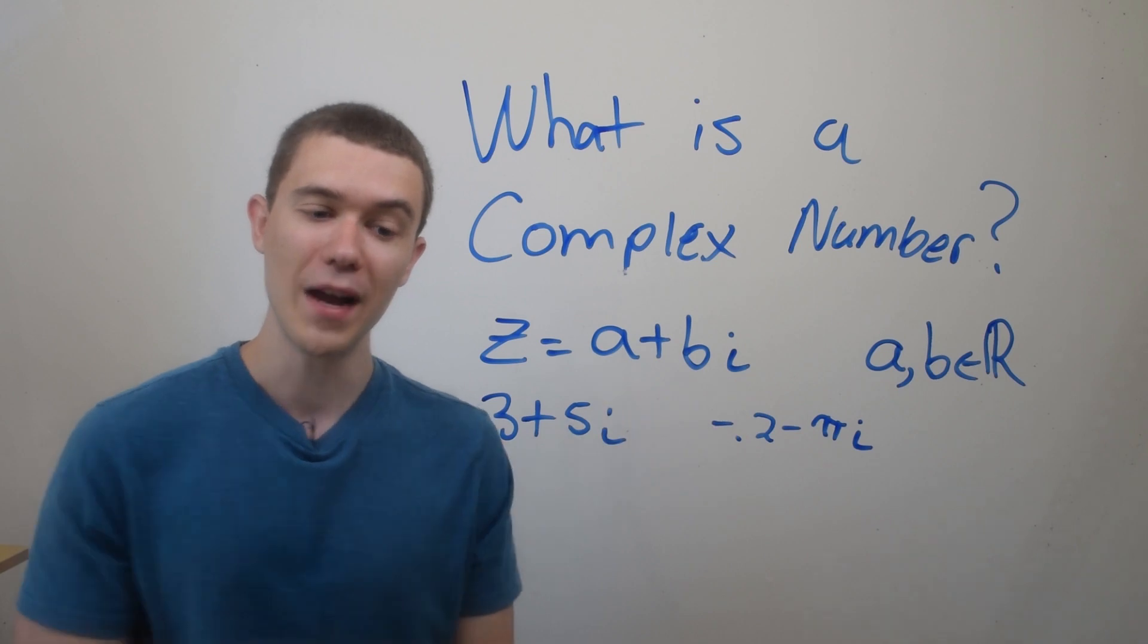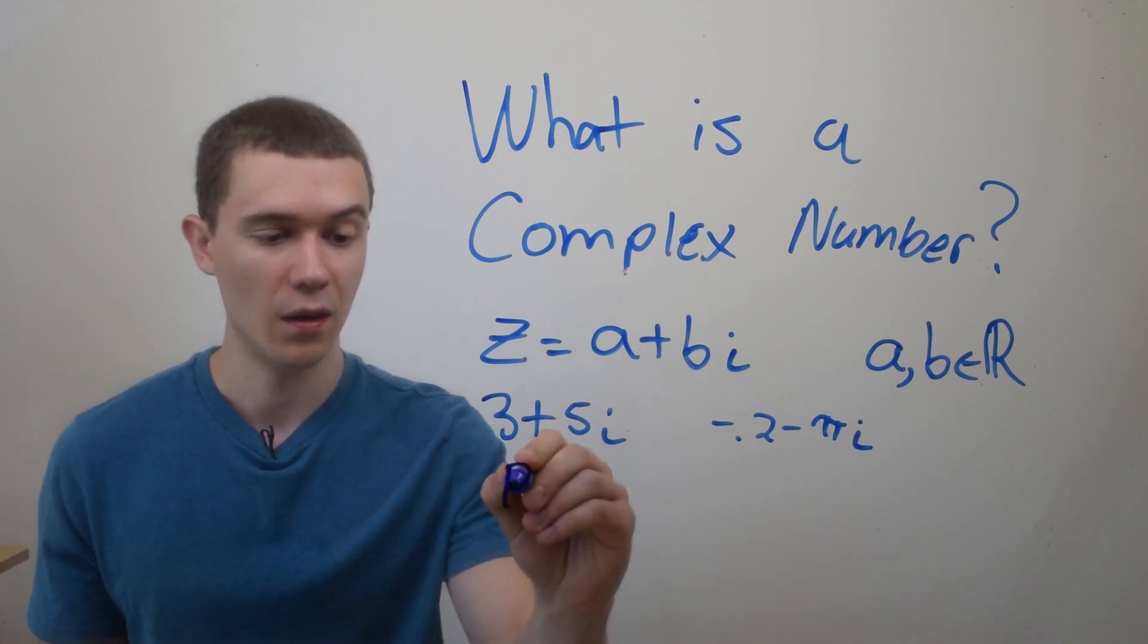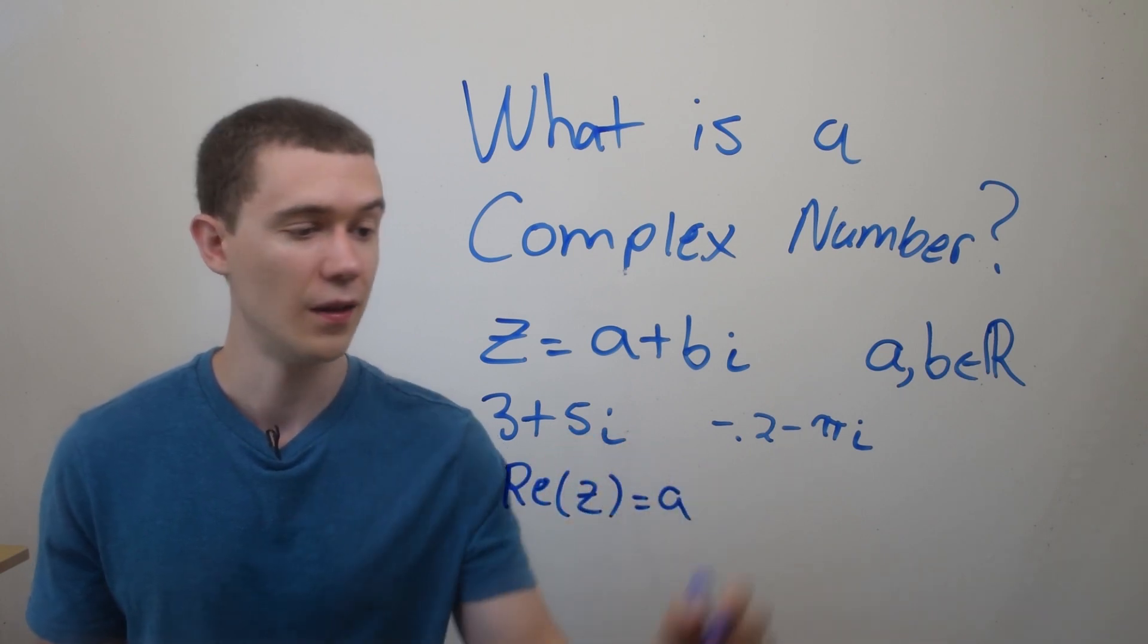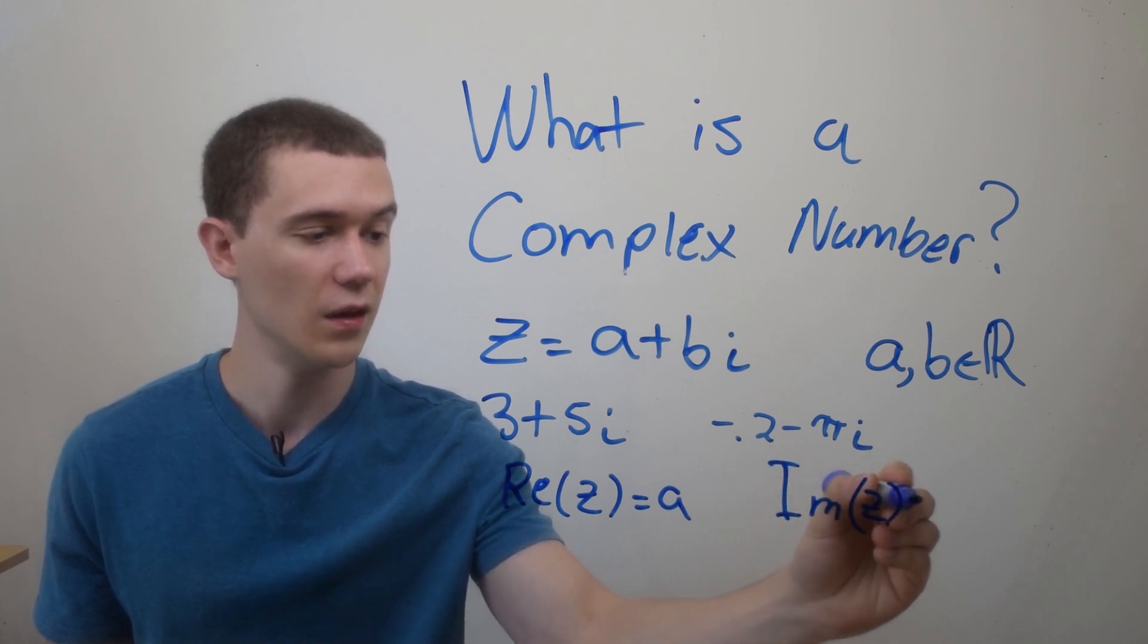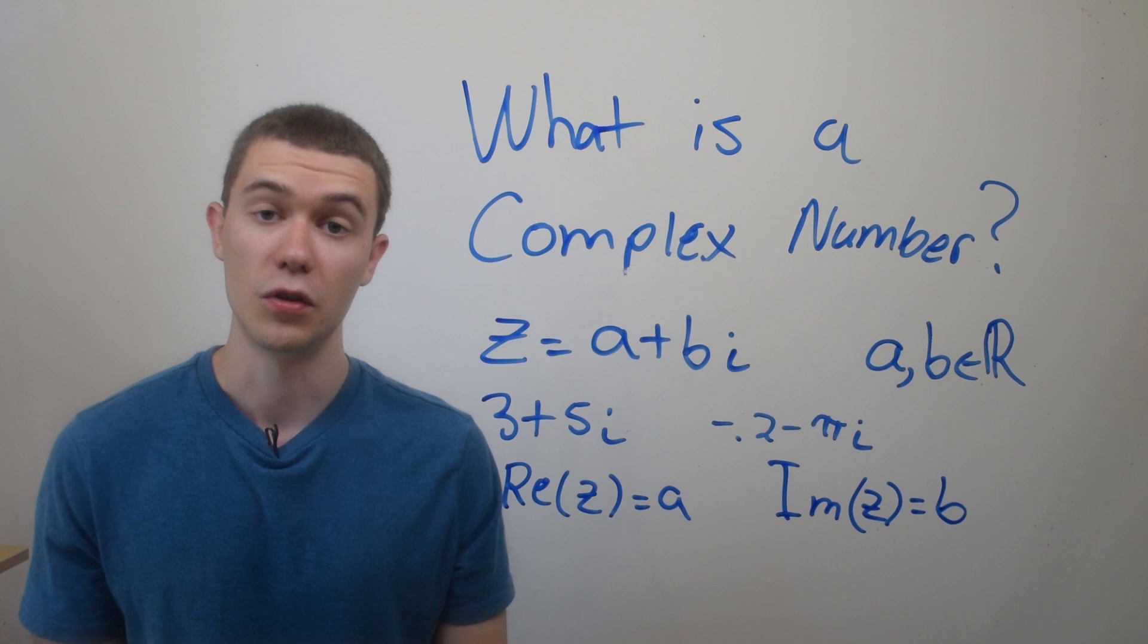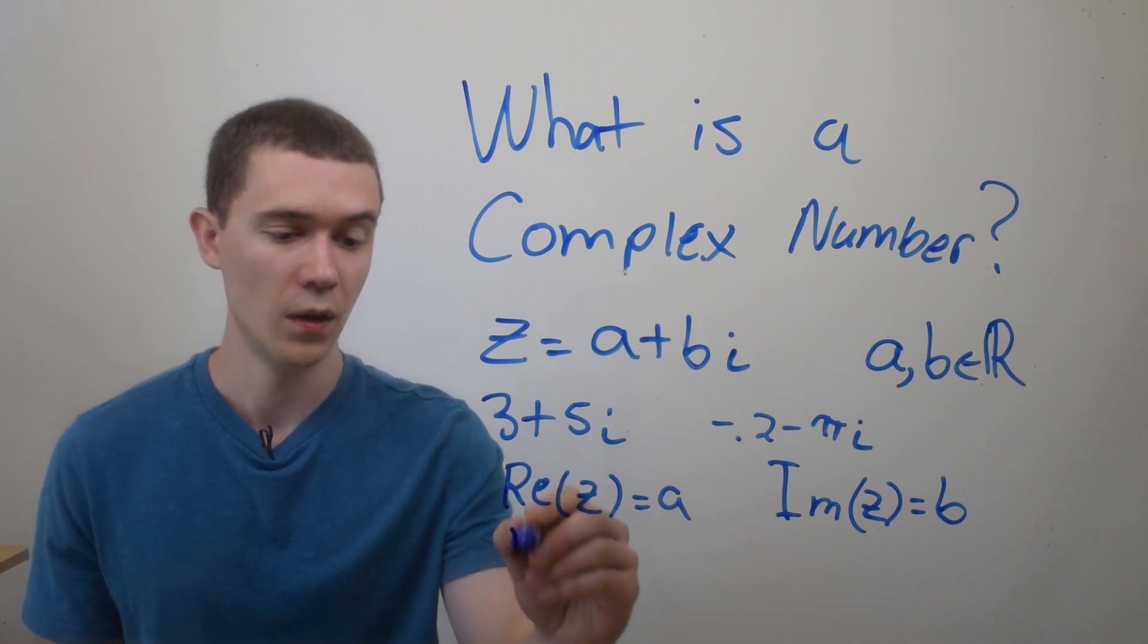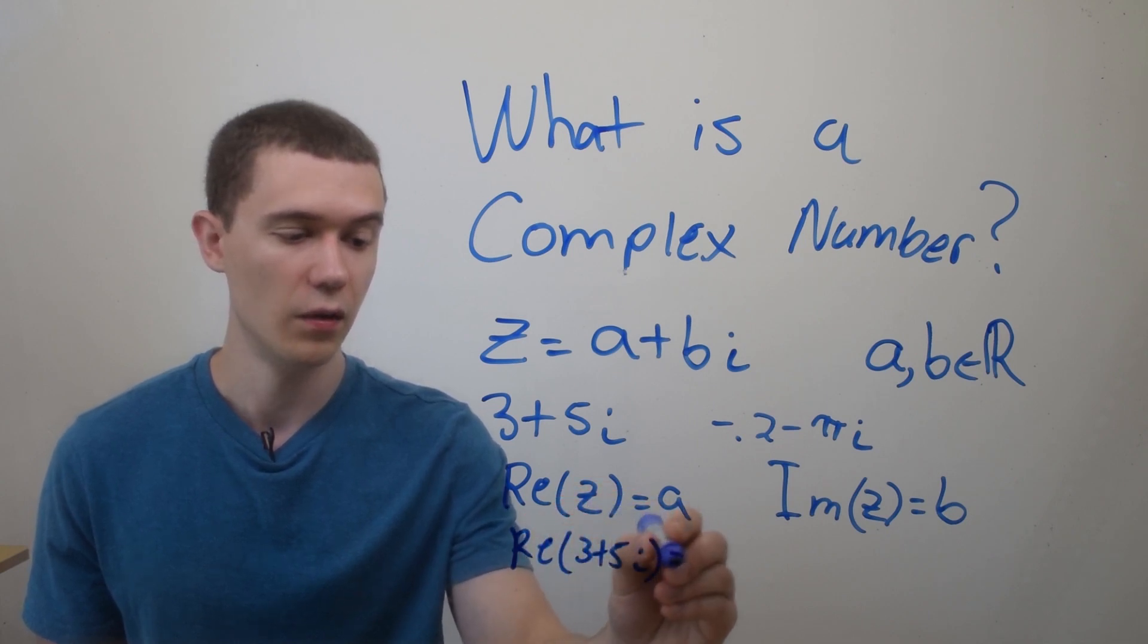We'll denote this by saying the real part of z, Re(z), equals a, and the imaginary part of z, Im(z), equals b. Notice the imaginary part is not bi, it's just b. So in this example, the real part of 3 plus 5i would be 3.